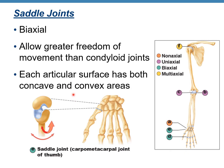Saddle joint is also biaxial, providing greater freedom than the condyloid joint. Each articular surface has both concave and convex areas. An example of a saddle joint is the carpometacarpal joint of the thumb.